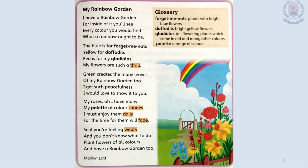You can see those flowers in the picture too. So when you look at all these colorful flowers, they make you excited. Let's move on to the third stanza: 'Green creates the many leaves of my rainbow garden, too. I get such peacefulness, I would love to show it to you.' As the poet says, many trees and their leaves are green in the poet's colorful garden. So the poet feels peaceful when she is there, and she likes to show us that peacefulness too.